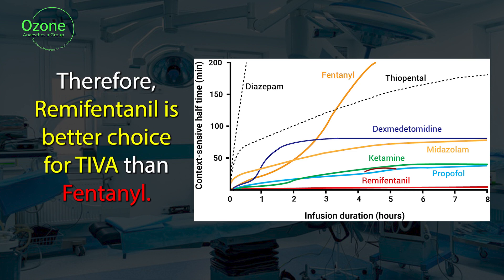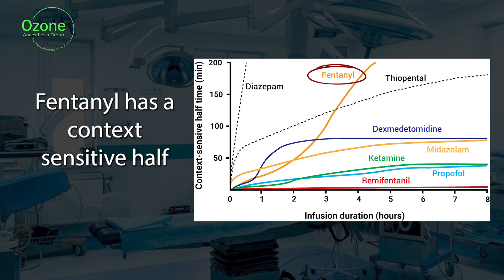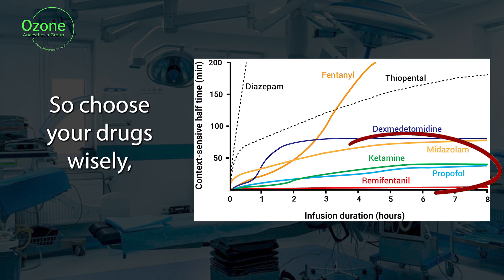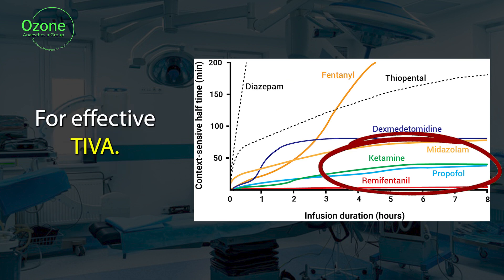Therefore, remifentanil is a better choice for TIVA than fentanyl. Fentanyl has a context-sensitive half-life of 300 minutes at the end of 8 hours. So, choose your drugs wisely for effective TIVA.